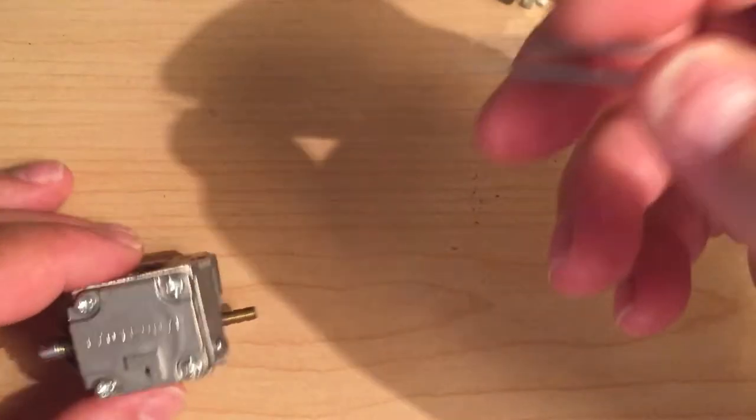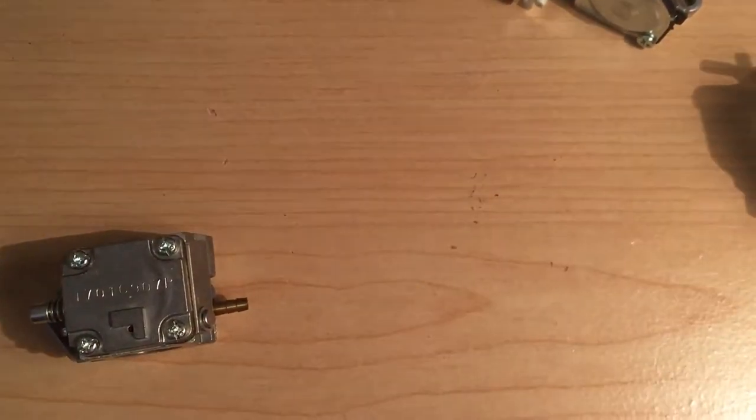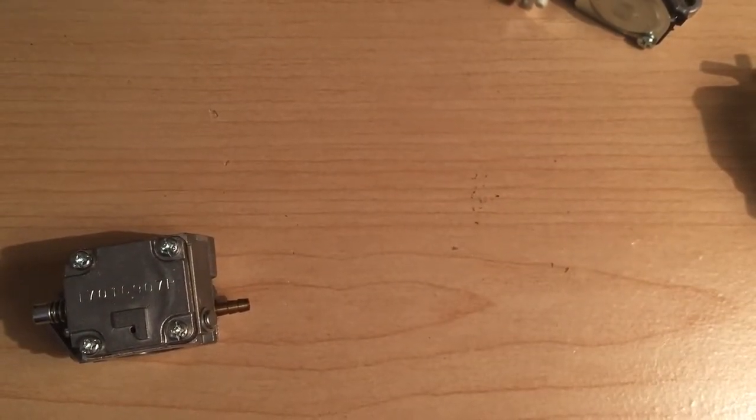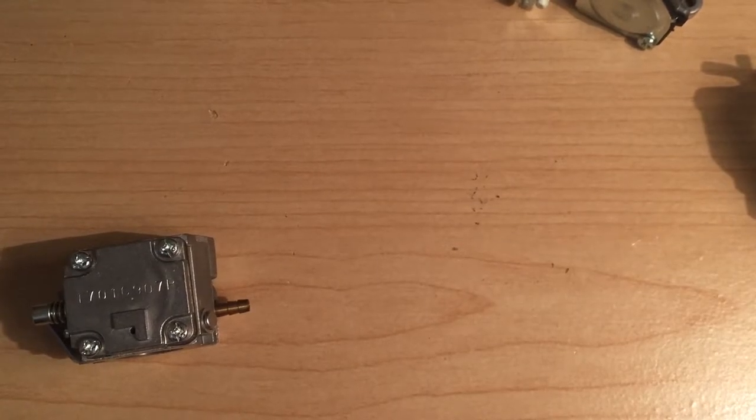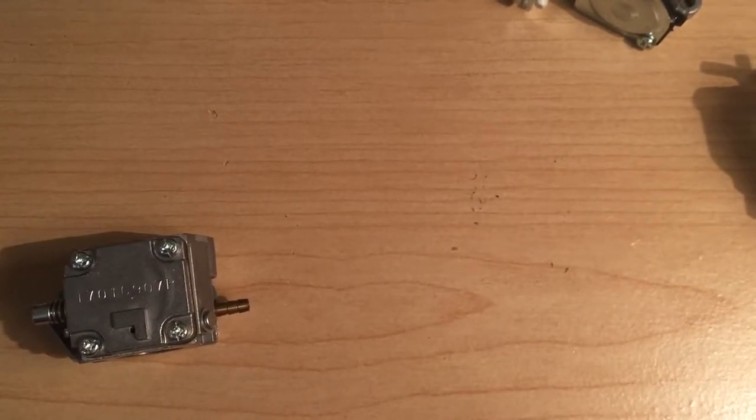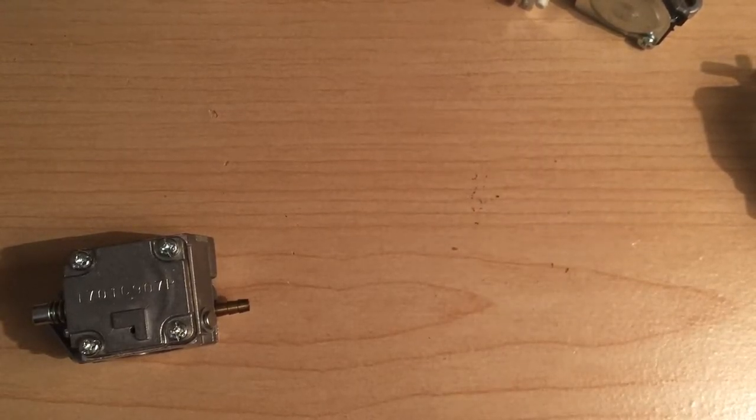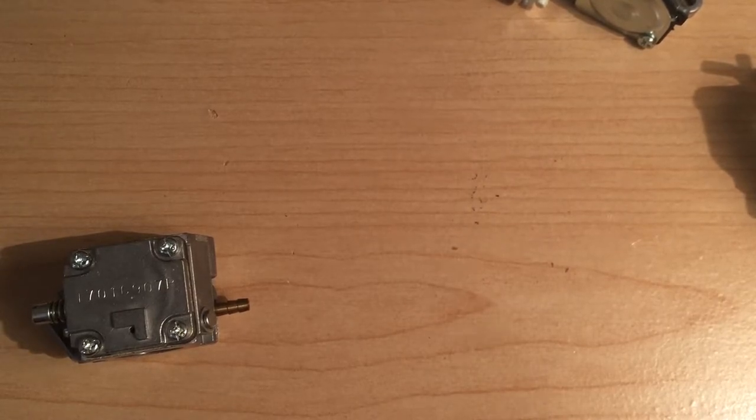Okay, today I'm going to show you how to find the model number on a Zama carburetor. I'm going to start with older carburetors from the late 70s early 80s. As the years have gone by, the location of the model number has changed. In the late 70s early 80s, the model number was engraved into the carburetor.